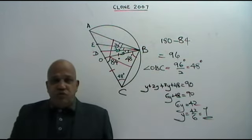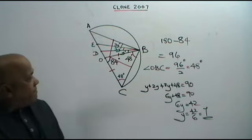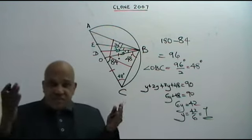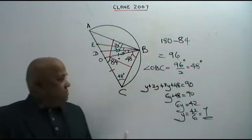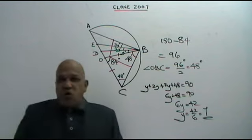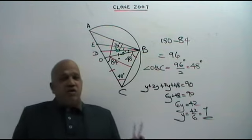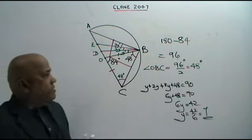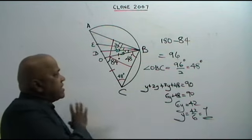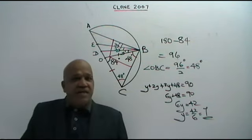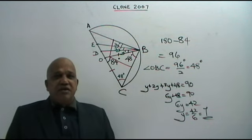The value of Y is 7 degrees. Make sure you memorize all the angle theorems, circle theorems, and the useful Pythagorean values. You will find these sums very, very simple.